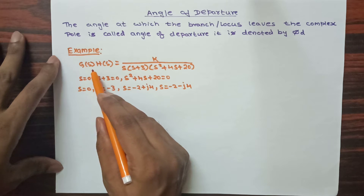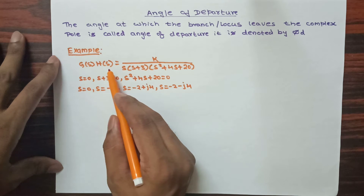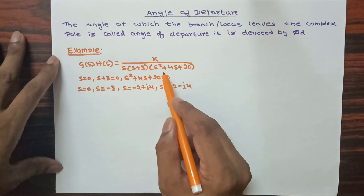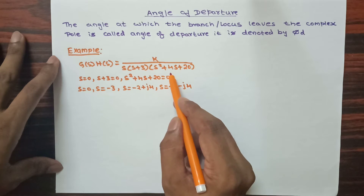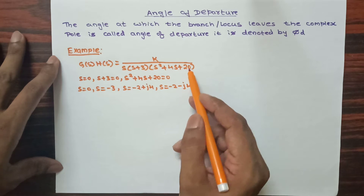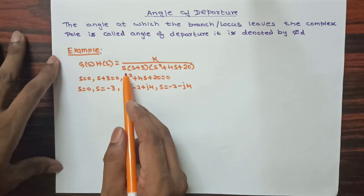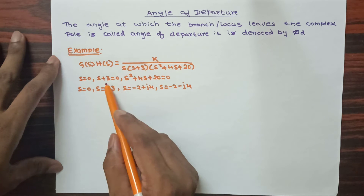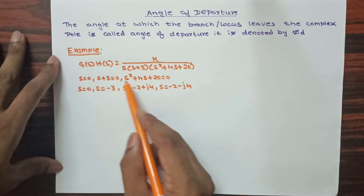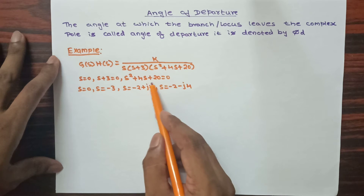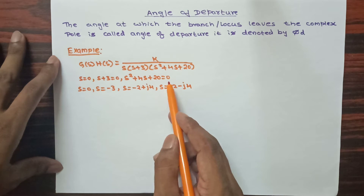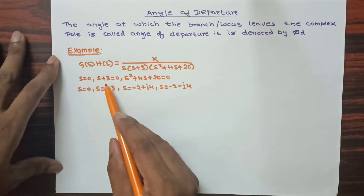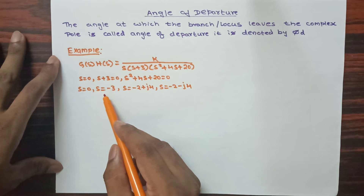In this example I have considered open loop transfer function G(s)·H(s) = K divided by s·(s+3)·(s²+4s+20). Here the denominator poles are: s = 0, s+3 = 0, and s²+4s+20 = 0. So this can be written as s = 0 and s+3 = 0 can be written as s = -3.